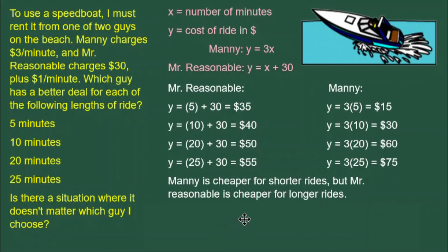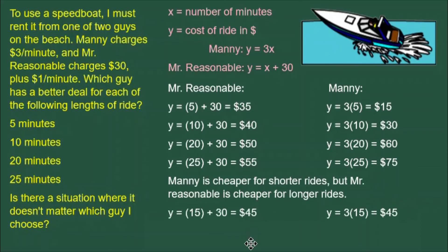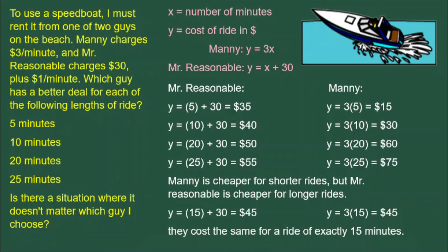But what about the situation where it doesn't matter which guy you choose? If we try plugging in some more values by trial and error, we find that at X equals 15 minutes it costs $45 regardless of which of the two guys on the beach you buy the ride from. So they cost the same for a ride of exactly 15 minutes, and now the entire question is answered.